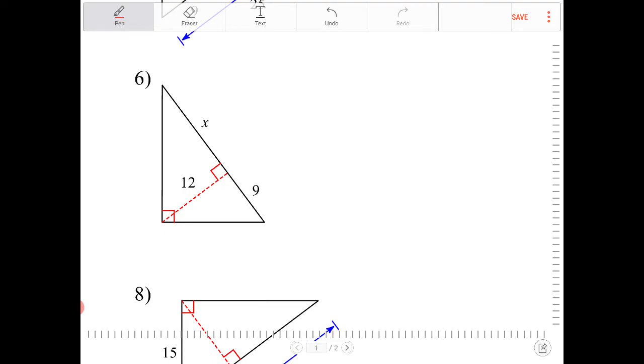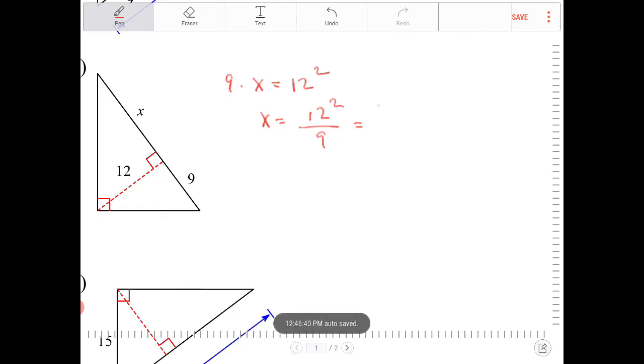So again, I do 9 times X is equal to 12 squared. So X is equal to 12 squared over 9. Or this is the same thing as 144 over 9, but instead I'm going to do something a little bit different. You may not necessarily think of doing this the first time around, but 12 squared is the same thing as 3 times 4 to the second. So therefore, this is 3 squared times 4 squared over 3 squared. This is just 16. So X is equal to 16.